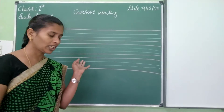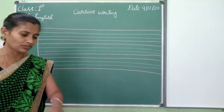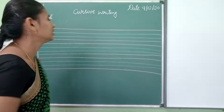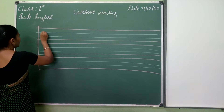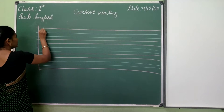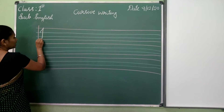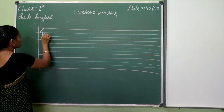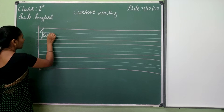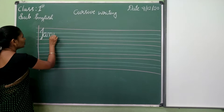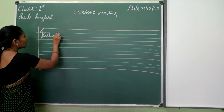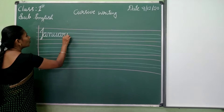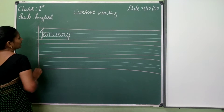Now, are you sure how to write these words on four lines? First one is January. J — you should write capital letter J. Here they use four lines for children. J-A-N-U-A-R-Y, January.